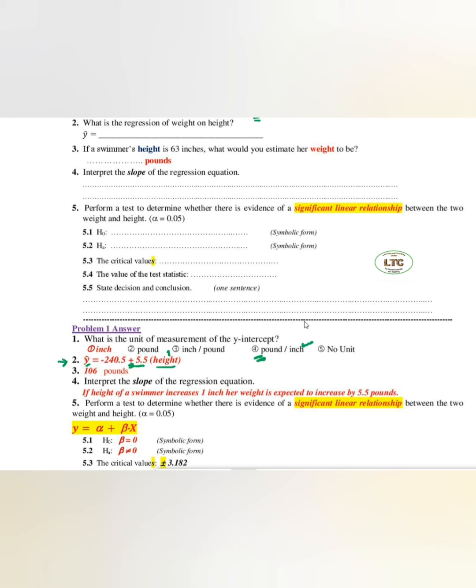The interpretation of B is like this: for one inch higher in height, weight will increase by 5.5 pounds. Interpret this one.